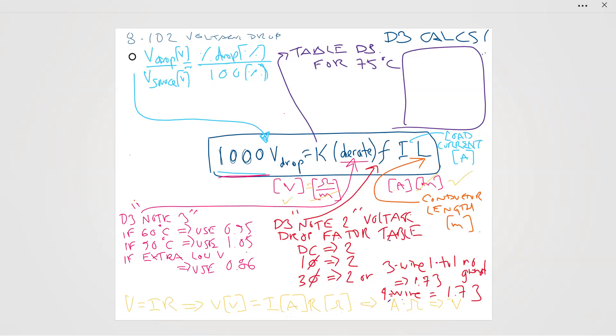How do you use this then to do the voltage drop calculations of 8-102? Well, you simply write down this formula. And you simply plug in what you know, and you solve for what you don't know. We can calculate voltage drop, we can calculate K from table D3, which I'm going to post in here. And we're going to have a nice little cheat sheet for this. We are going to derate K with the notes of D3 note 3, which are down here. And then we are going to multiply by F, which is the voltage drop factor table. And then we are going to multiply by load current and we multiply by conductor length and those are the relationships.